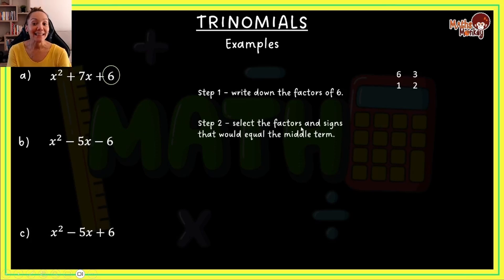Step number 2 says select the factors and signs that would equal the middle term. In our question, the middle term is 7. We look at if I could only add and subtract these pairs, which pair would actually be able to give me 7? The answer for this is 6 and 1, because 3 and 2, even if we add 3 to 2, it gives us 5. If we take 3 minus 2, it gives us 1. So there's no way that 3 and 2 can give us 7. But 6 and 1 can give us 7. We need to get positive 7, so we take positive 6 plus positive 1 would give us positive 7. Now what we do is we open our brackets.